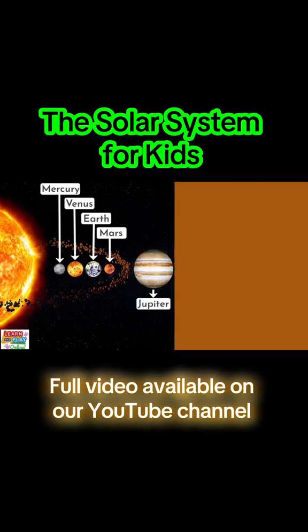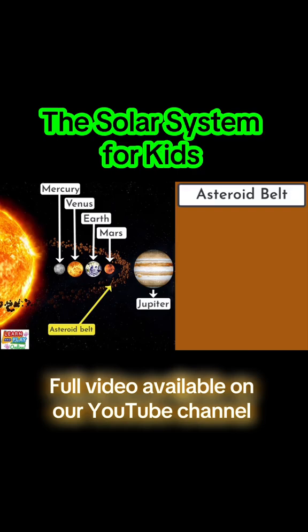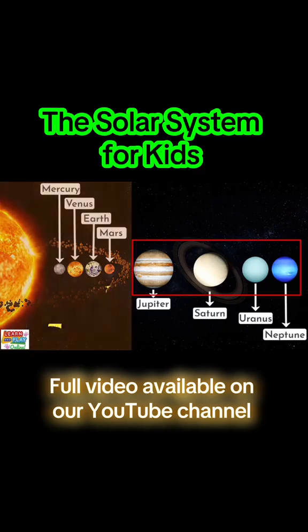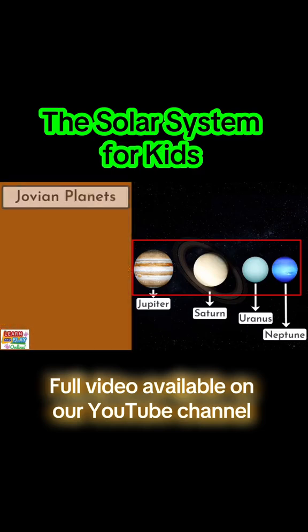Sitting outside the terrestrial planets and in between Mars and Jupiter is the asteroid belt. The four outer planets furthest away from the Sun, which are Jupiter, Saturn, Uranus and Neptune are called the Jovian planets.